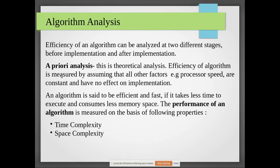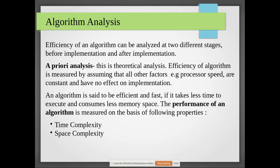Before implementation, we call it a priori analysis. Here, efficiency is measured by assuming all factors — for example, processor speed — are constant and have no effect on implementation. This is because one person's processor speed may be more, another's computer may be slower. Irrespective of that, the program should have the same output. An algorithm is said to be efficient and fast if it takes less time to execute and consumes less memory space — that is what we call good performance.